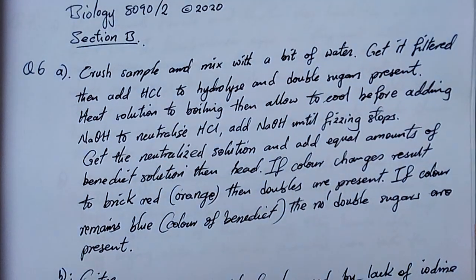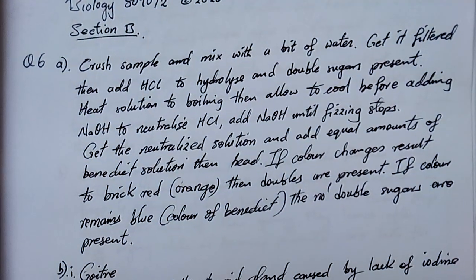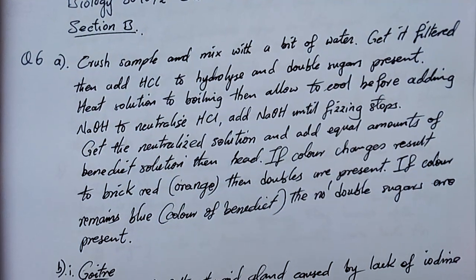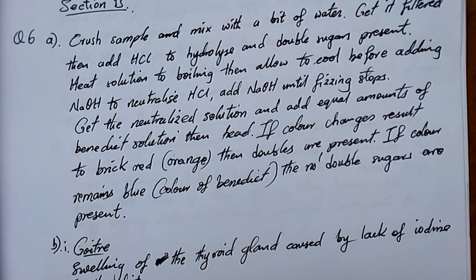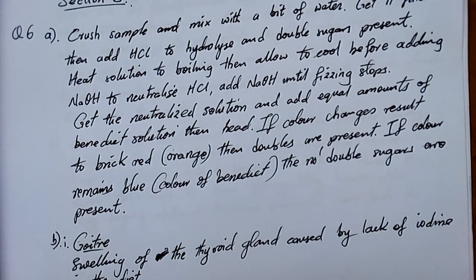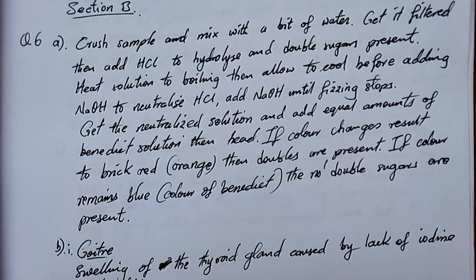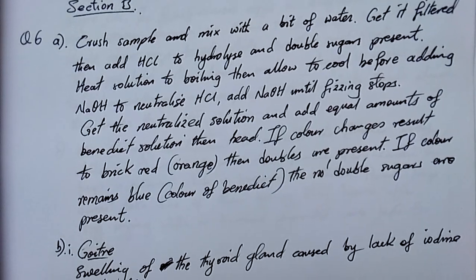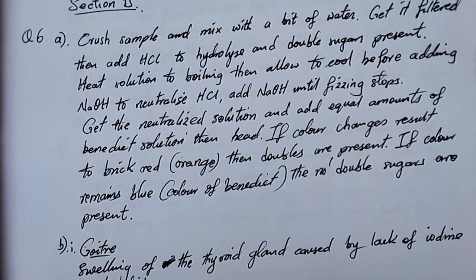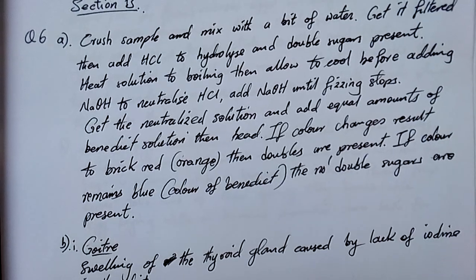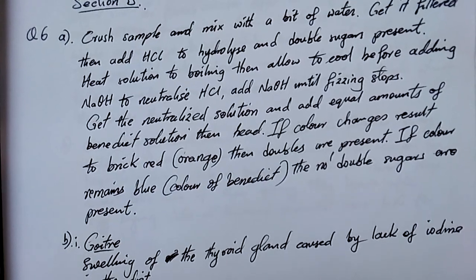You can rewrite it but don't change the meaning. Crush the sample, mix with a bit of water, get it filtered, add HCl to hydrolyze. What are we testing for? Reducing sugar. We add HCl to hydrolyze the reducing sugars or double sugars so that they can be broken to simple sugars — to hydrolyze the double sugars.